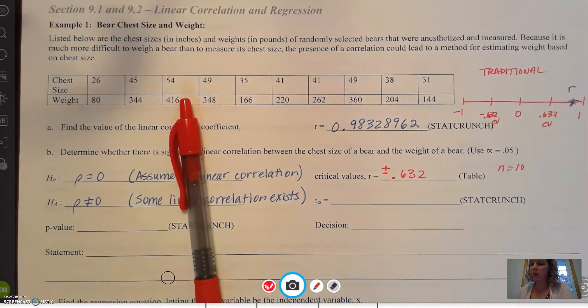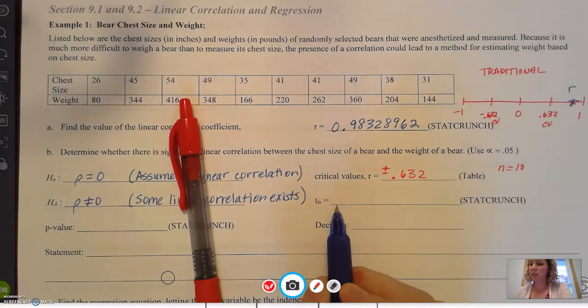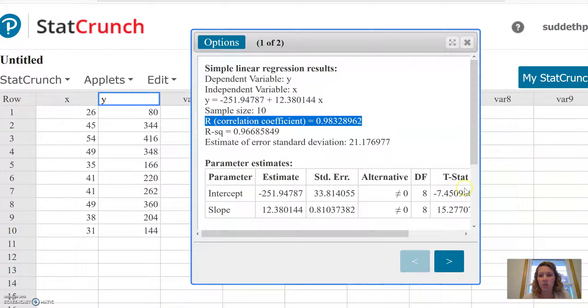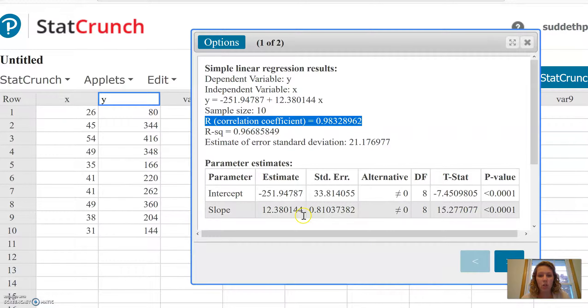On our p-value method, we're going to find the test statistic and the p-value. Let's go back to StatCrunch to find those. According to the p-value method, remember, we're looking at the slope row here, not the intercept row. Our t-test statistic is going to be 15.277077, and our p-value is going to be less than 0.0001, or you can say 0.